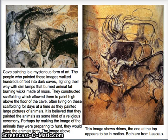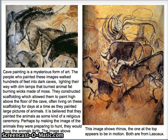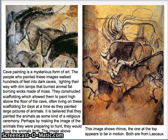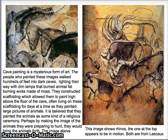Cave painting is a very mysterious form of art. The people who painted these images walked hundreds of feet into dark caves, lighting their way with dim lamps that burned animal fat on wicks made of moss. They constructed scaffolding which allowed them to paint high above the floor of the cave, and they often lived on these scaffolds for days at a time as they painted large pictures of animals. It's believed there was some kind of religious or spiritual significance to these animals, because they often made one right on top of another. Maybe they were getting ready to hunt and felt they would bring the spirit of the animal forth. Some of them have marks where apparently spears were thrown at the walls.